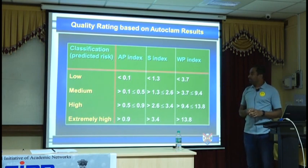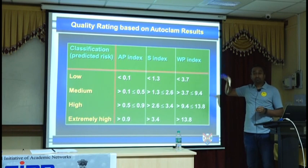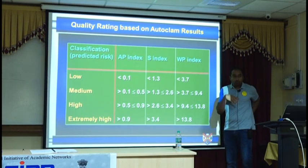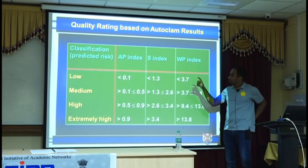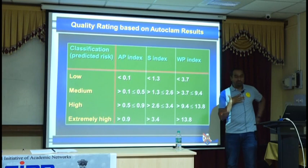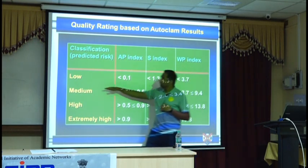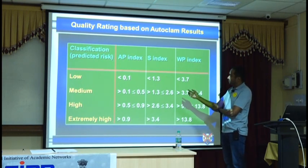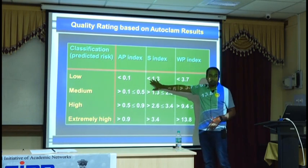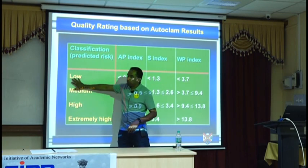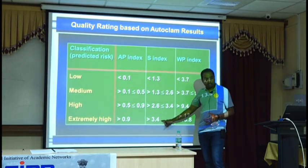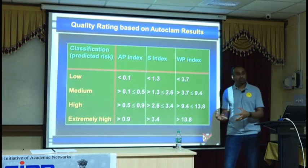If you look at the ICE Construction Manual, you see a classification like this for different tests. The ICE Construction Manual was put together by a few people including myself, Bashir, and Sudarshan, who looked at all the tests. Our idea was to say: if you buy anything commercially available, what classification system works? For AutoClam, if your sorbitivity index is 1.3 or less, the predicted risk is low and it's good quality concrete. An extremely high sorbitivity index means it's a weaker quality concrete.